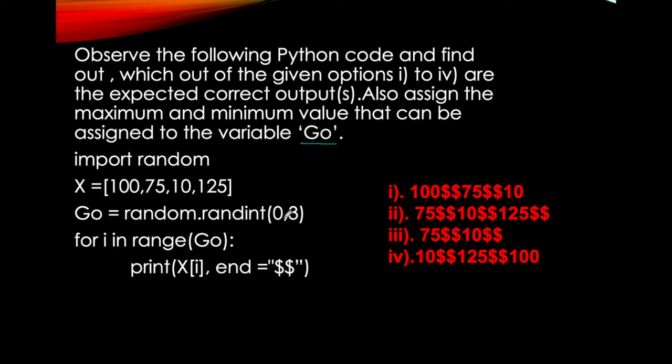So what is go? random.randint(0,3). This is the problem with slides - some key gets pressed and the slide changes. Okay, so go is equal to random.randint(0,3). So minimum value will be 0, maximum value will be 3. It's very simple. So go can have either 0, or 1, or 2, or 3. Any of these values can be there.